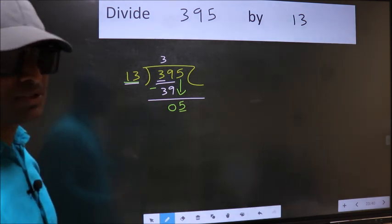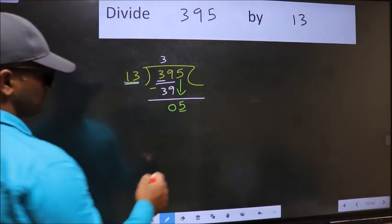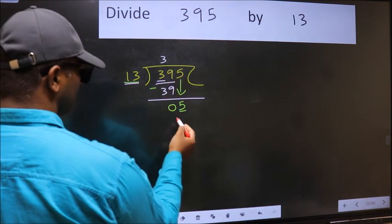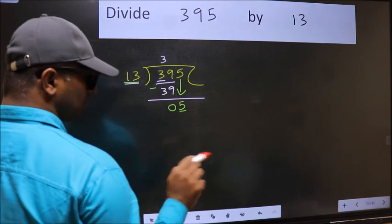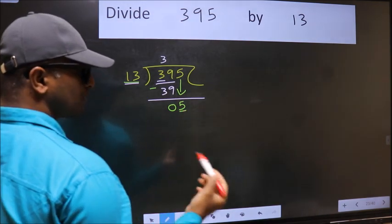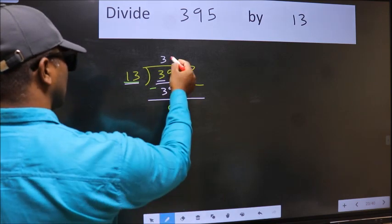Instead, what you should do is think which number should we take here? If I take 1, we will get 13, but 13 is larger than 5. So we should take 0.